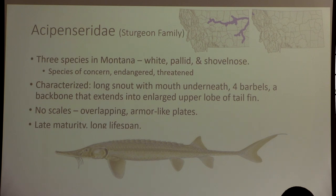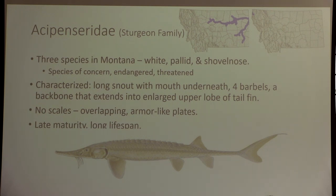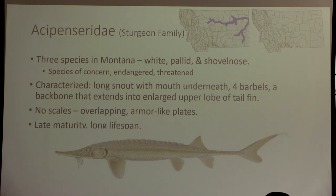Sturgeons particularly struggle with dams, river blockages, and diversions. FWP monitors pallid sturgeons using remote GPS tag check stations that register whenever a tagged sturgeon passes through, so we know how many are successfully passing areas where we've created diversions or ladders. One ladder at Thompson Falls is specifically for bull trout — it's really cool to look at. Sturgeons also feed low — they have that lower-positioned mouth for bottom feeding and exist in open water, getting quite large.